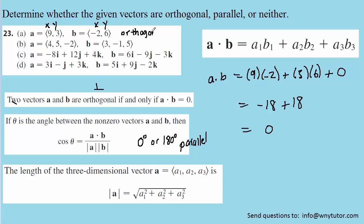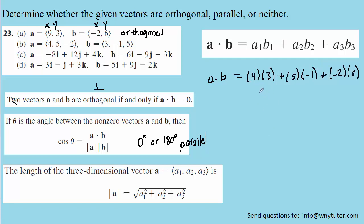We'll now move on to the vectors in part b and once again compute the dot product. This time the vectors have x, y, and z components. We've filled in those components for both vectors — you may want to pause and verify the numbers. When we compute the dot product, we get a value of negative 3, which is not equal to 0. So the vectors of part b are not orthogonal, which might mean they are parallel. We'll investigate that next by calculating the angle between them using the formula.